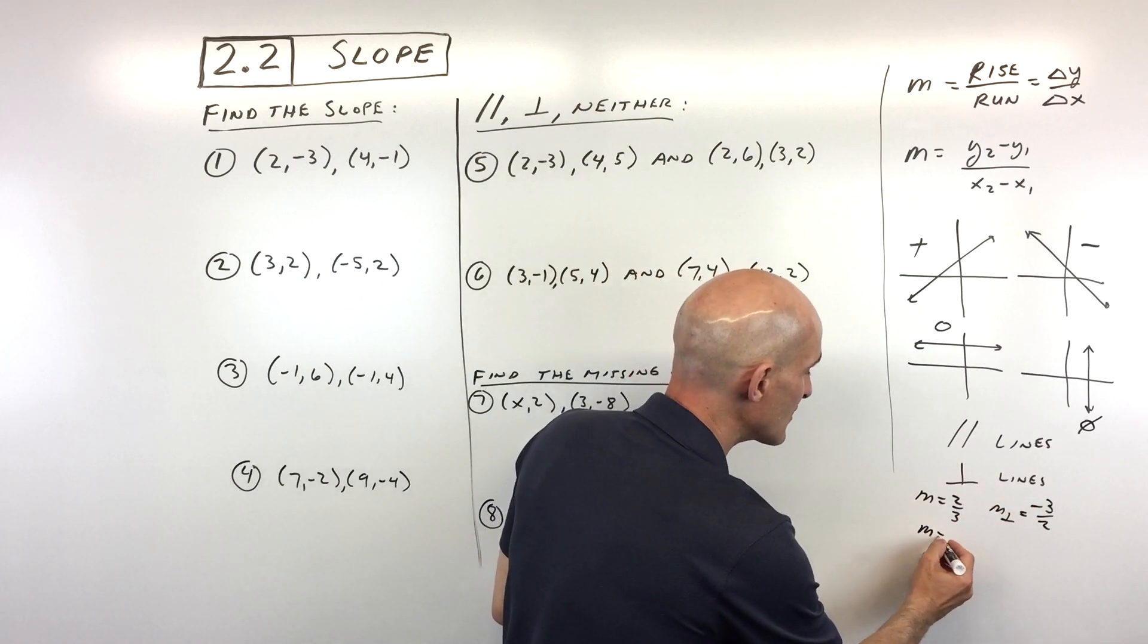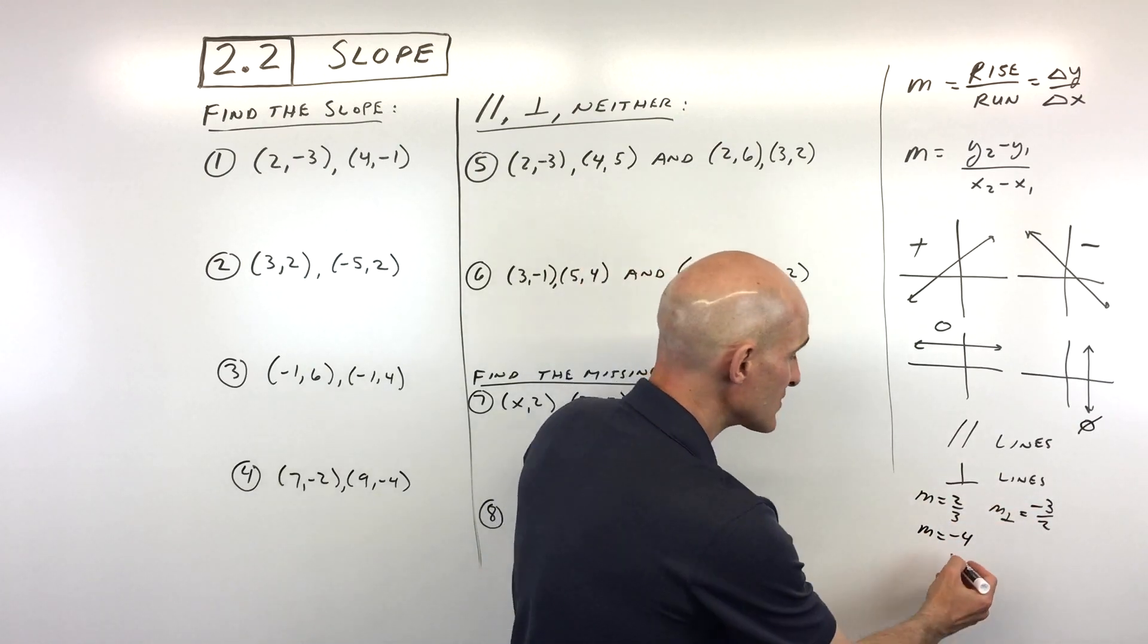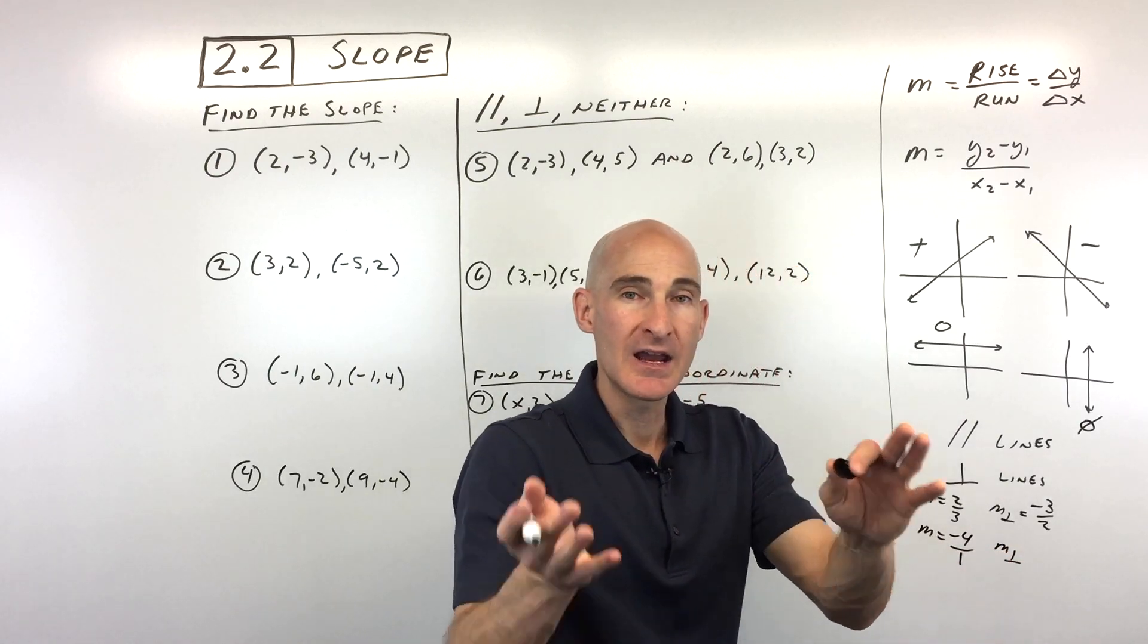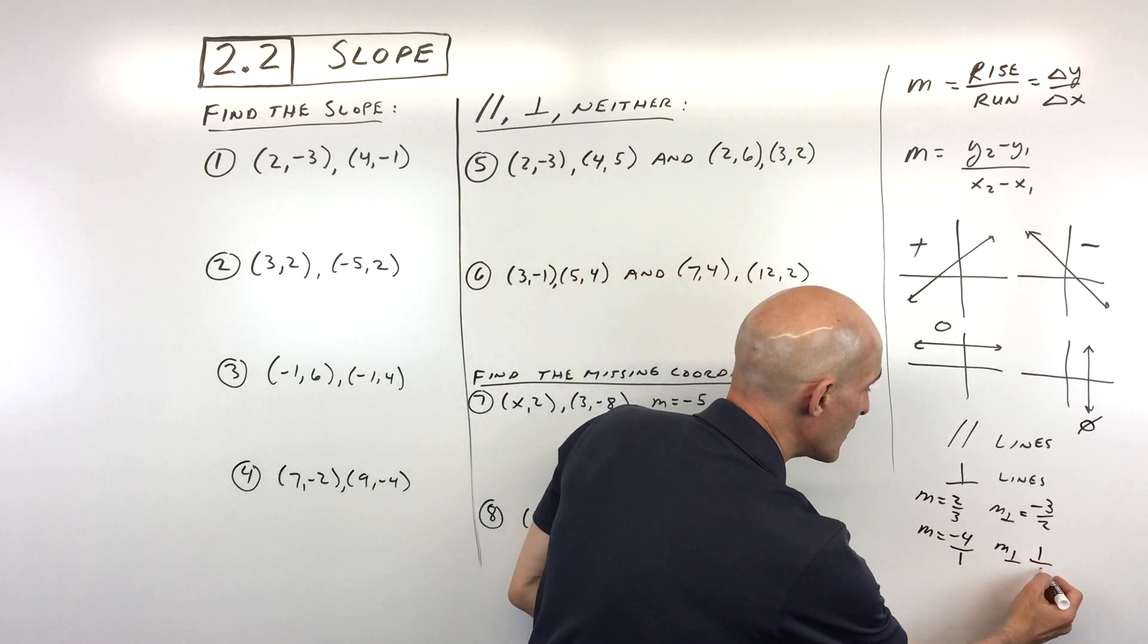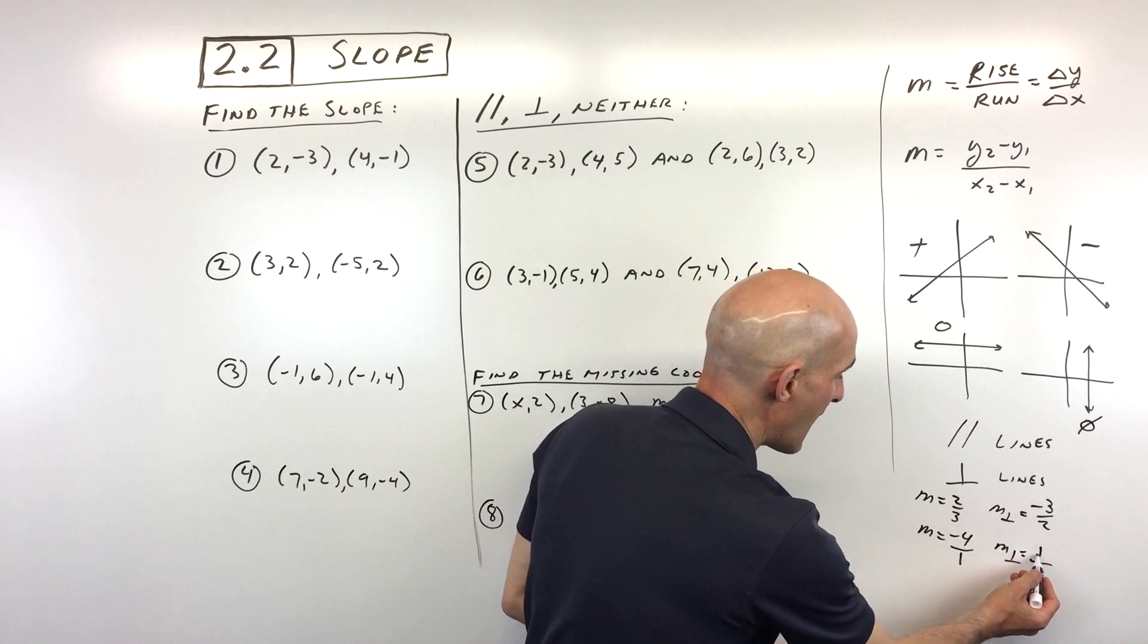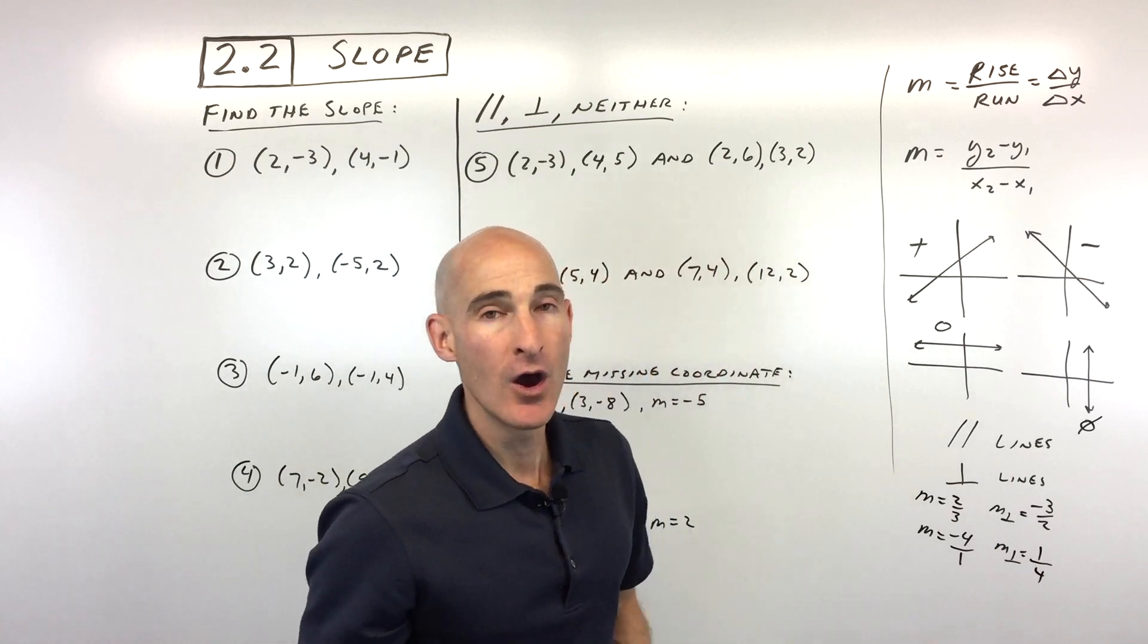I'll show you another example. Say the slope was negative 4. You can think of negative 4 as like negative 4 over 1. But if you want to find that perpendicular slope, again, you're going to flip that fraction over, and you're going to change it to the opposite sign. So instead of negative 4, now we have positive 1 fourth.